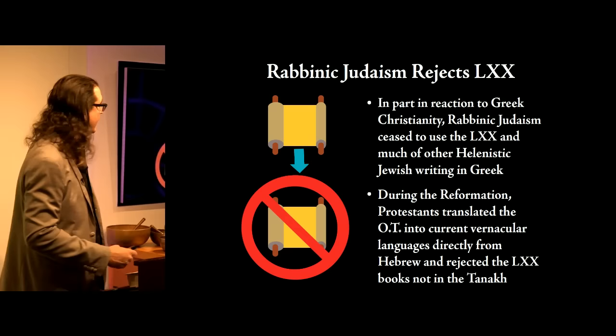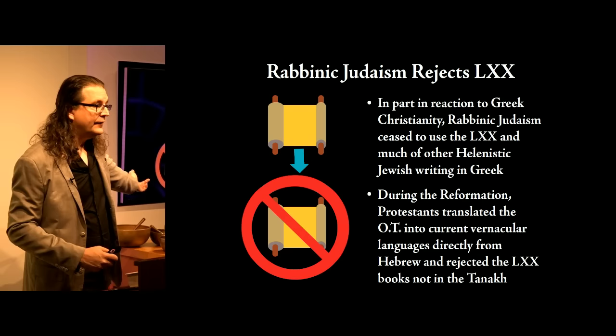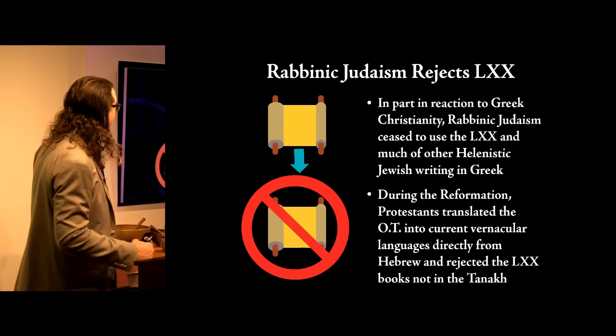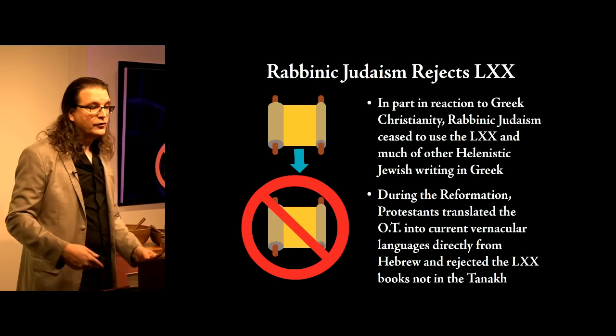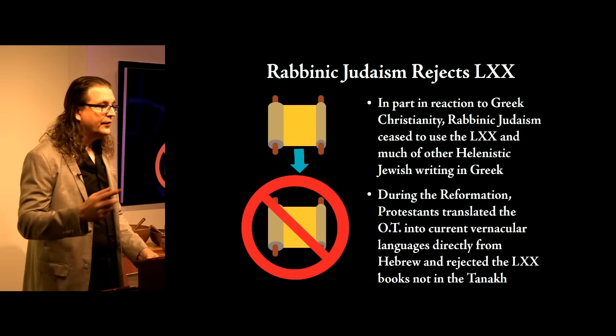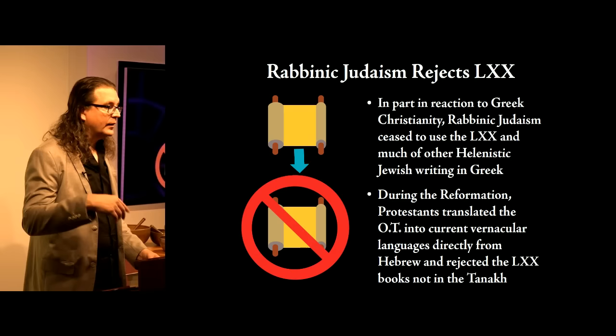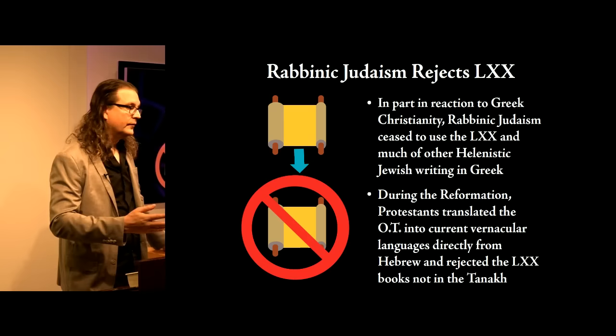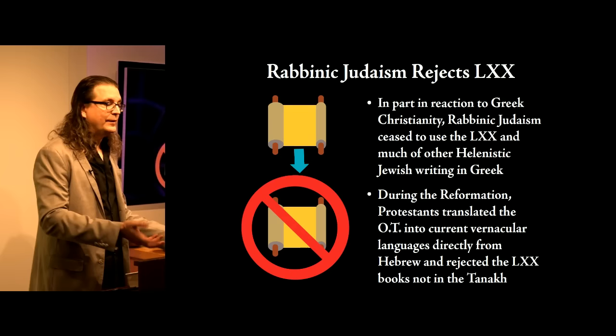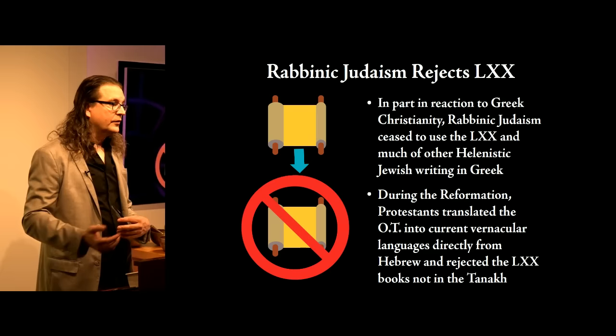When the Reformation occurred 500 years ago in the Christian West — when Protestants broke away from Rome — they did so at a time of renewed Renaissance interest in ancient texts and literary criticism. Going back to originals, they were able to look at Jewish texts and noticed: we have all these books in our Bible that you don't have in yours, and Judaism is older than Christianity, so maybe these books shouldn't have been added. So the Protestants took them all out — all the ones the Jews don't have.